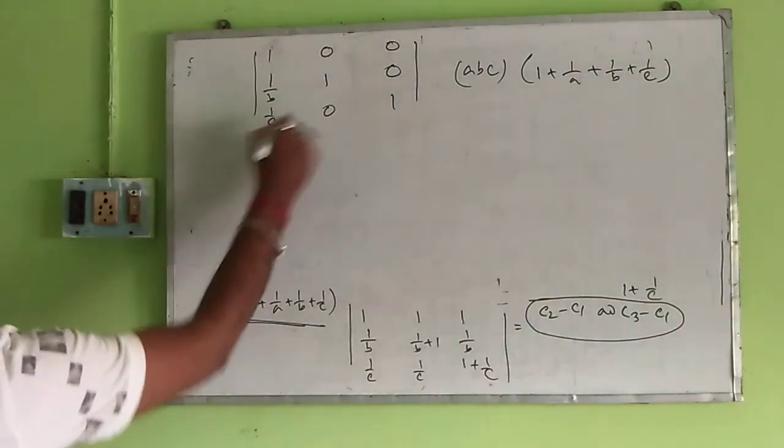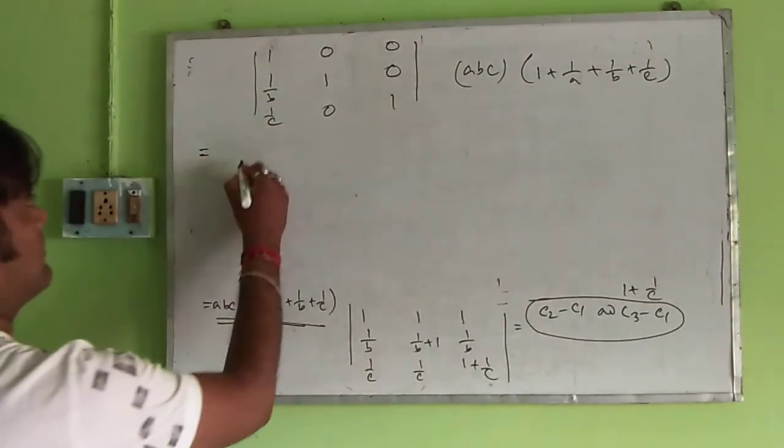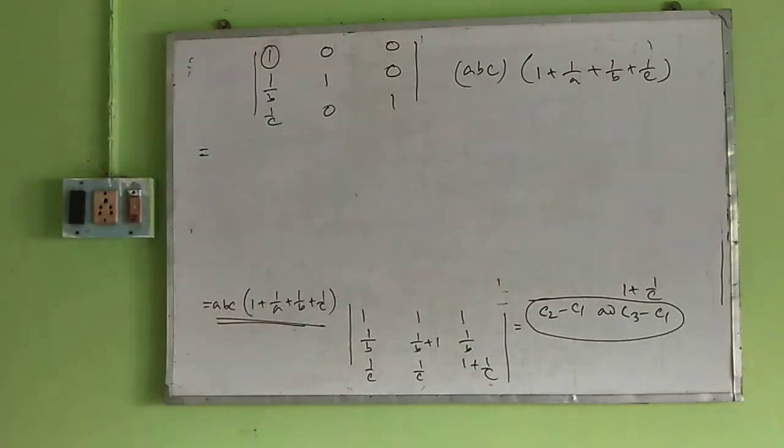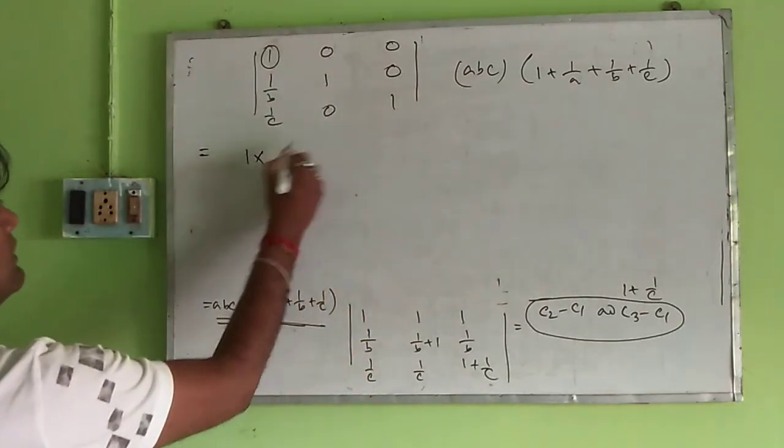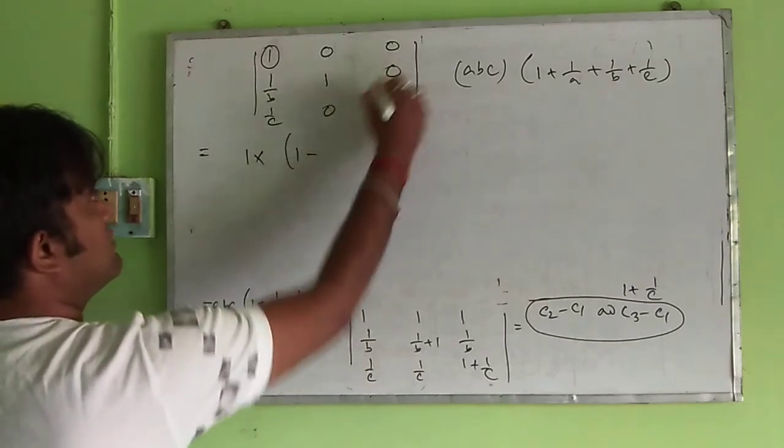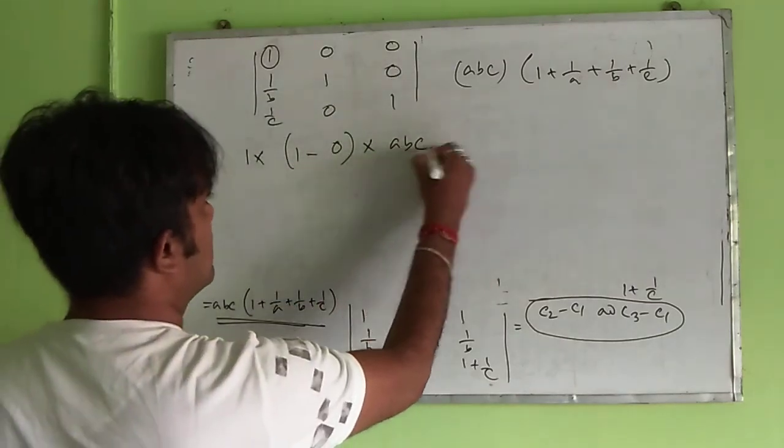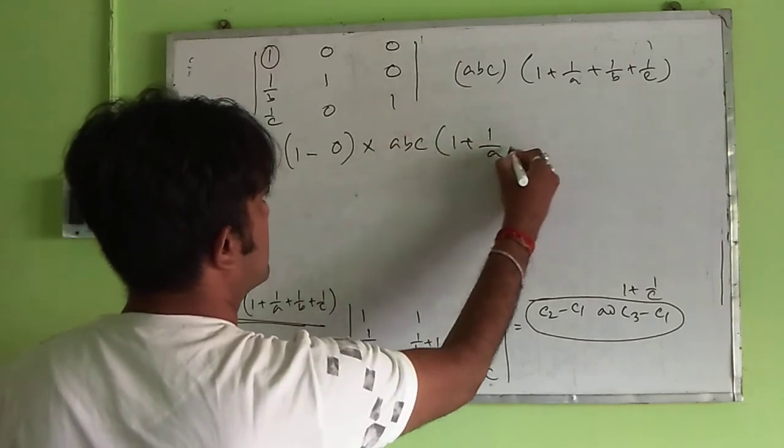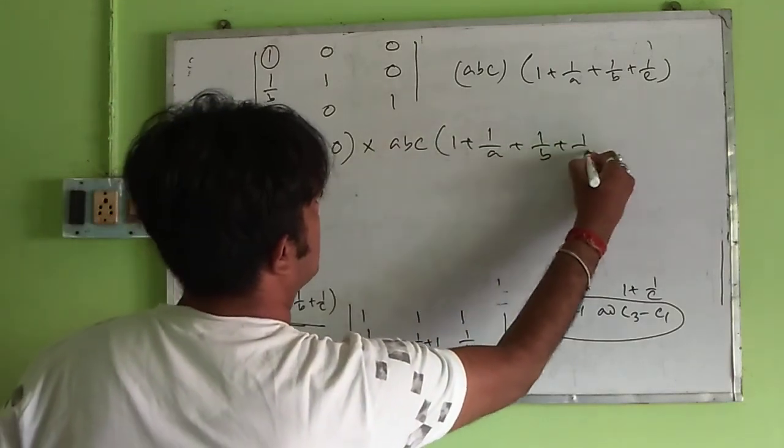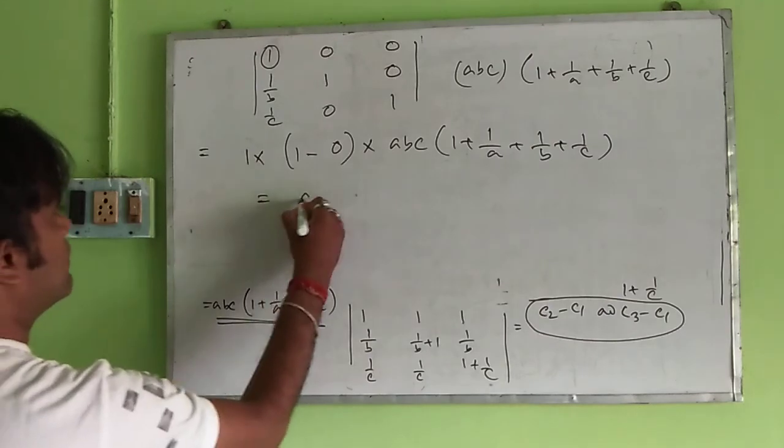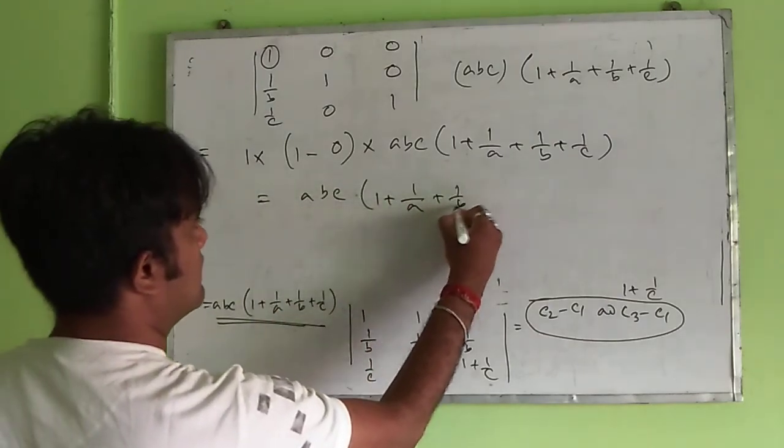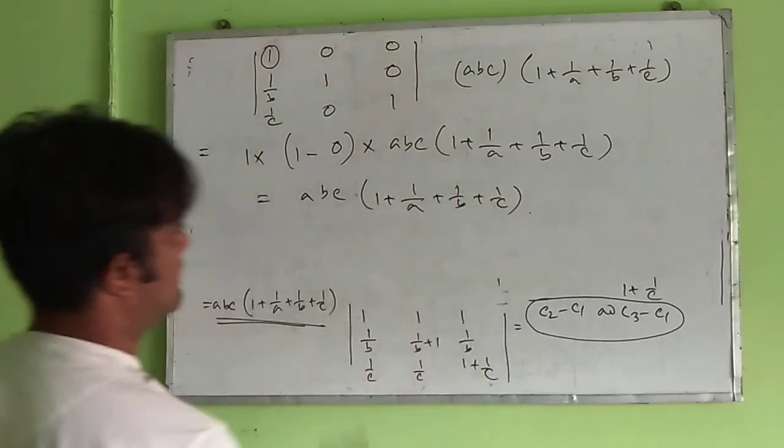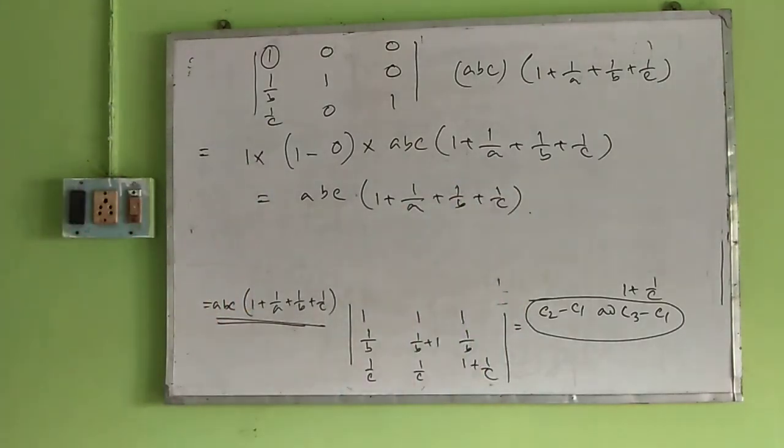Now expanding this determinant with respect to the first row: 1 into 1 into 1 minus 0 into 0 into ABC. So we get our result.